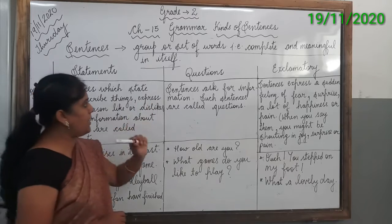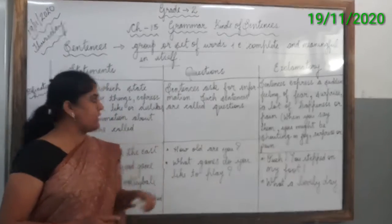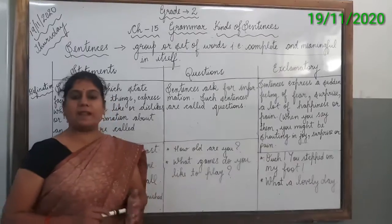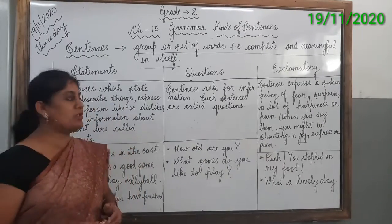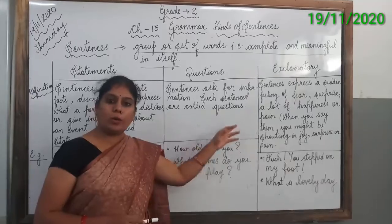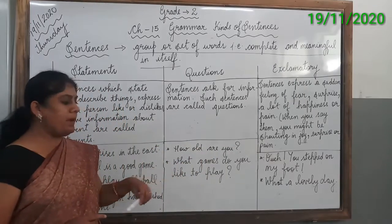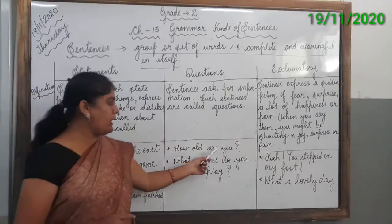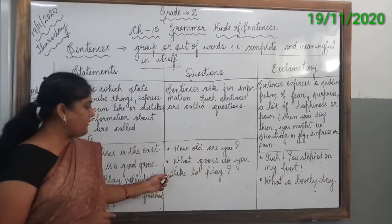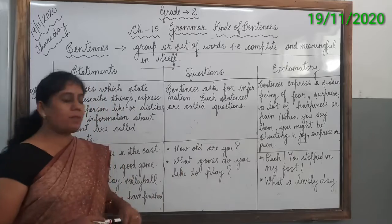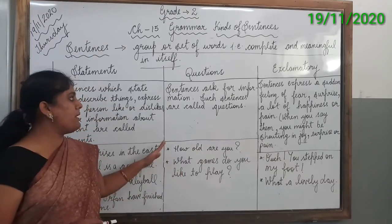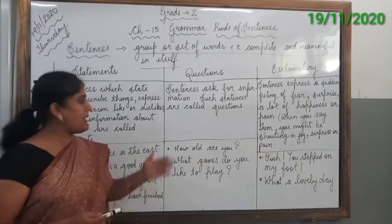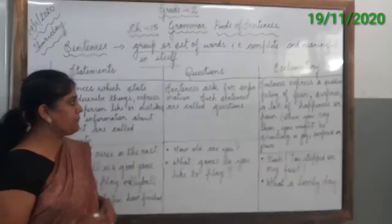Now we will learn about questions. What are questions? Sentences which ask for information are called questions. For example: 'How old are you?' and 'What games do you like to play?' In these sentences, you can see they are asking for information.